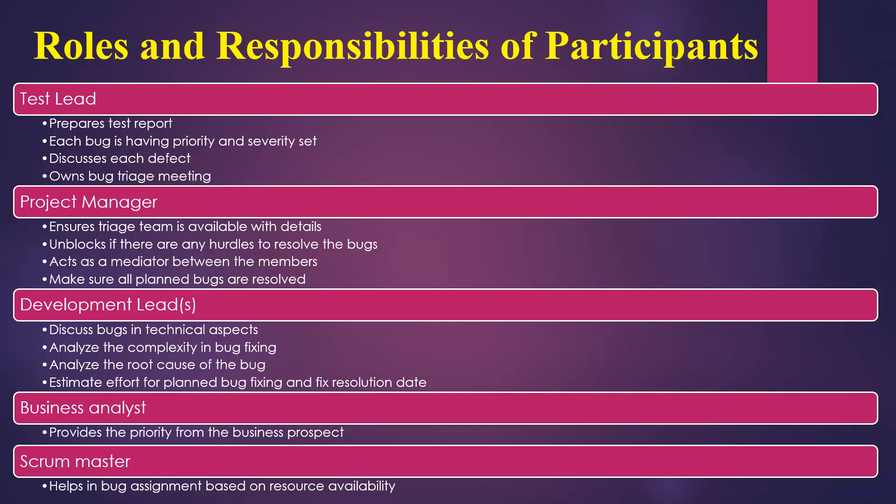The development lead, or leads if more than one, discuss bugs from a technical perspective: what caused the bug and why it arose. They provide technical insight, analyze the complexity of each fix — identifying whether a bug is a small fix with big impact or too complex to fix — and analyze the root cause. Finally, the dev lead estimates the effort required and gives a resolution date, which helps with release management planning.